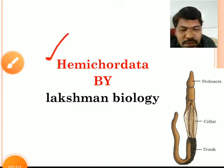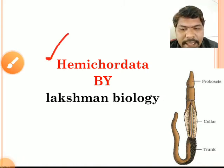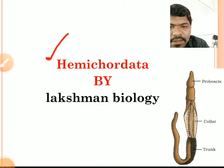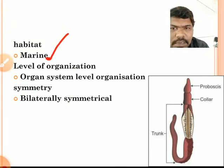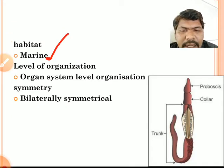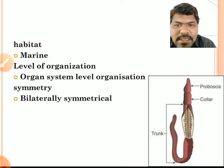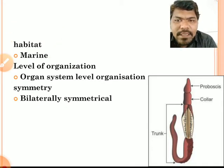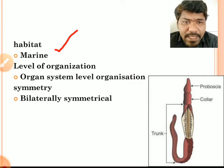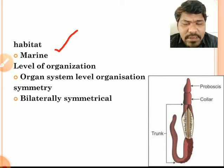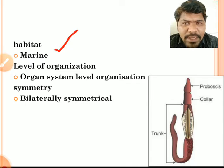Now we should discuss hemichordata. Hemichordata animals' habitat is marine. Habitat means the place where an animal lives. These hemichordates also live in marine water. Hence, the habitat for hemichordates is also marine.